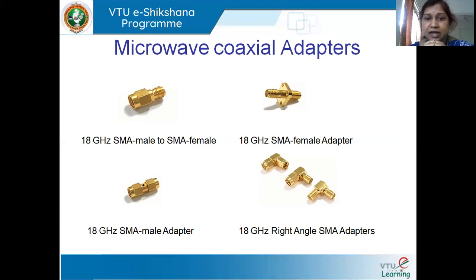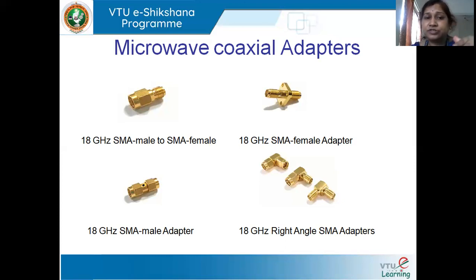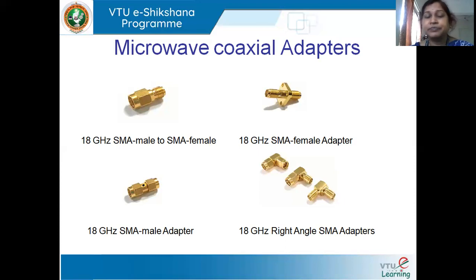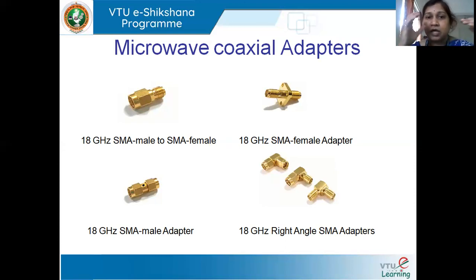So practically when you go to lab, try to see all these connectors and adapters and try to know their structure. Mainly depending on the operating frequency, the structure and size of these adapters and connectors are going to change and vary — it only depends on the wavelength, so according to the wavelength these things are designed. That's all for today's class. In the next class, we'll be studying some more passive devices used in microwave circuitry — specifically attenuators, precipitators, and T-junctions. Thank you for today. See you soon.